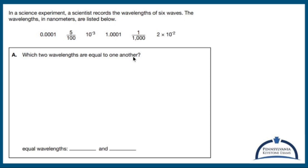Which two wavelengths are equal to one another? Whenever I have to deal with different forms of numbers, I like to view them all in terms of decimals. So I'm going to turn several of these into decimals. I have five one-hundredths, and I'm going to write that out. This is the tenths, this is the hundredths. Five one-hundredths looks like 0.05.